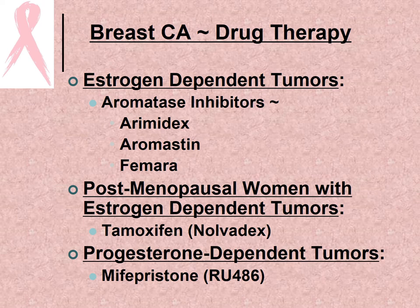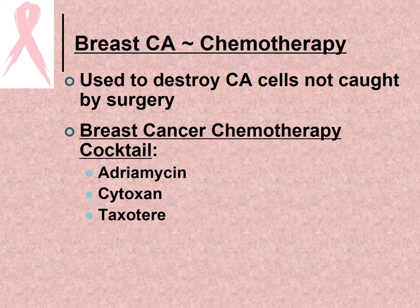For drug therapy, estrogen-dependent tumors are treated with aromatase inhibitors such as Arimidex, Aromasin, and Femara. Postmenopausal women with estrogen-dependent tumors are treated with tamoxifen, which is a very well-known drug. Progesterone-dependent tumors use mifepristone, also known as RU-486.